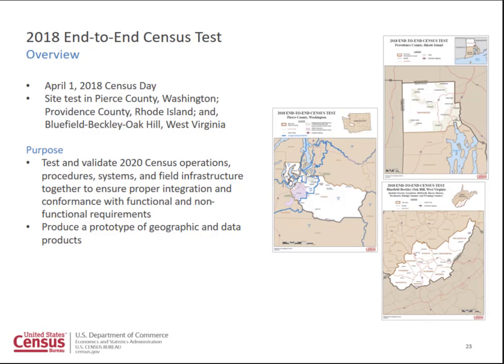Our 2018 end-to-end census test has an April 1st census day — it is a dress rehearsal for the census. It is a site test scheduled to take place in three sites: Pierce County, Washington; Providence County, Rhode Island; and Bluefield, Beckley, Oak Hill, West Virginia. All in all we have something like 770,000 housing units in sample. The purpose is to test and validate all of the 2020 census operations, procedures, systems, and field infrastructure together so we can fine-tune anything before the actual census. This test will also be the first time we've produced a prototype of the geographic and data products, which is critical to give state and local governments time to react and prepare for the redistricting data program.